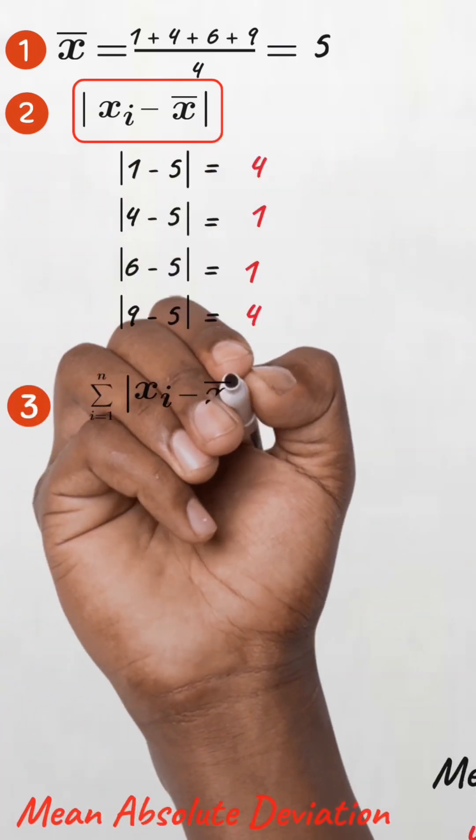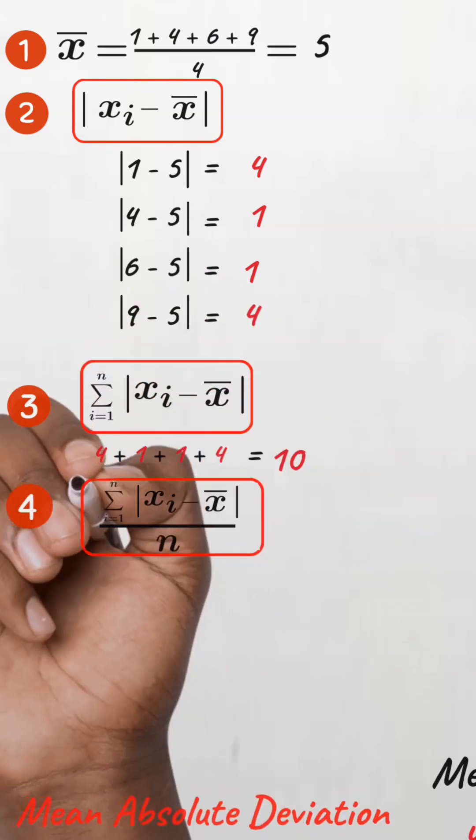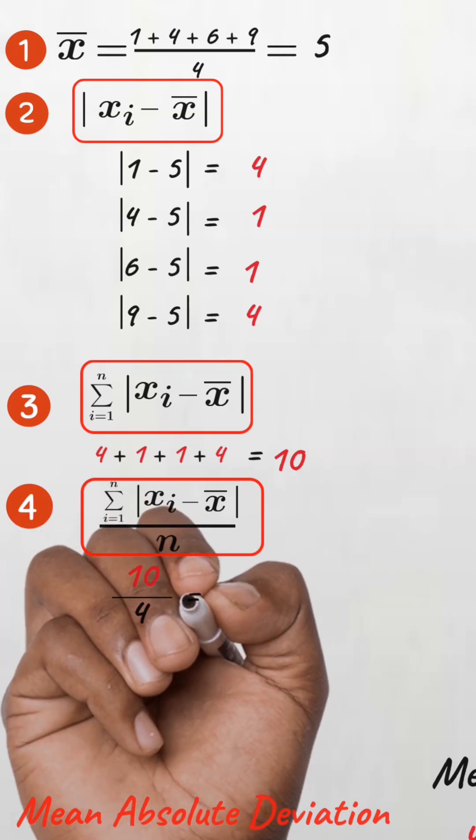Then we sum the absolute values. So 4 plus 1 plus 1 plus 4, that's 10. And finally we divide by n, which is 4, which will give 2.5.